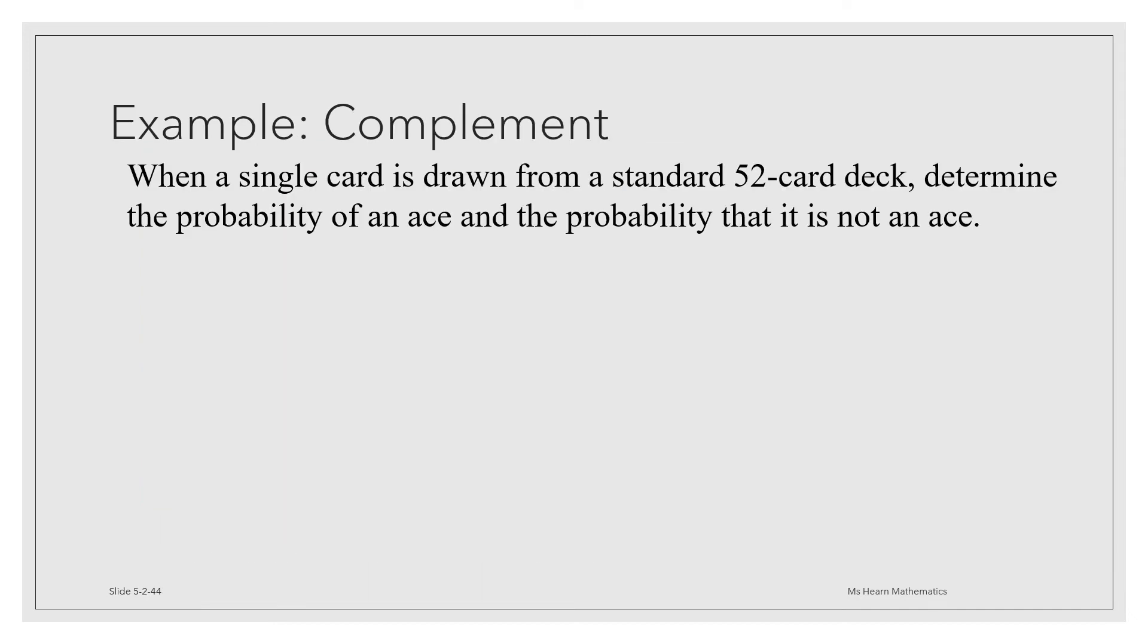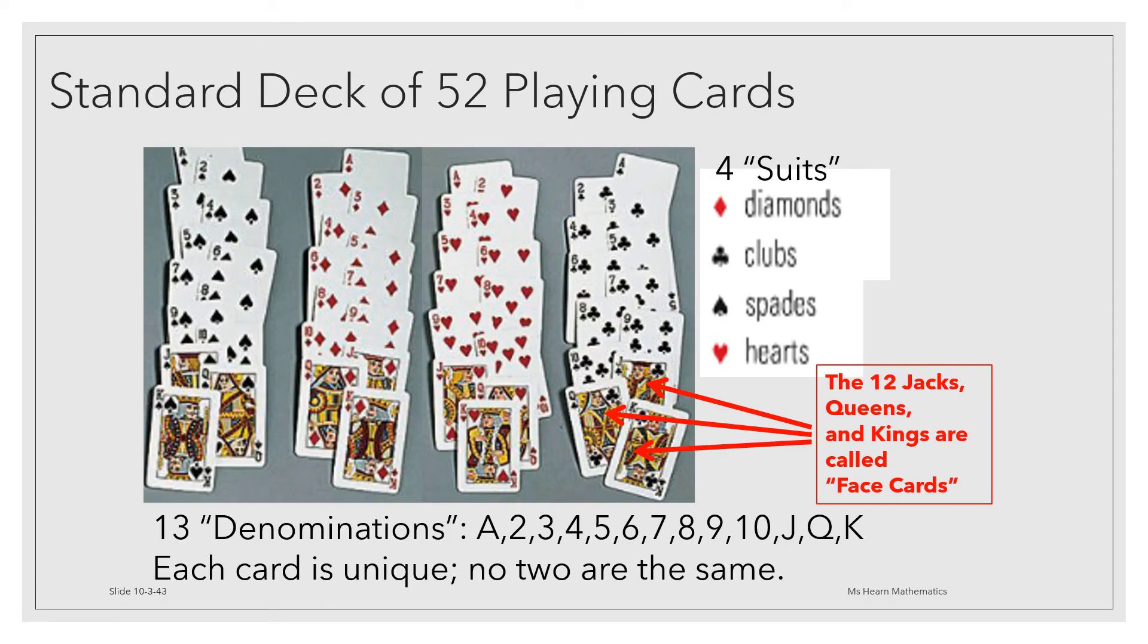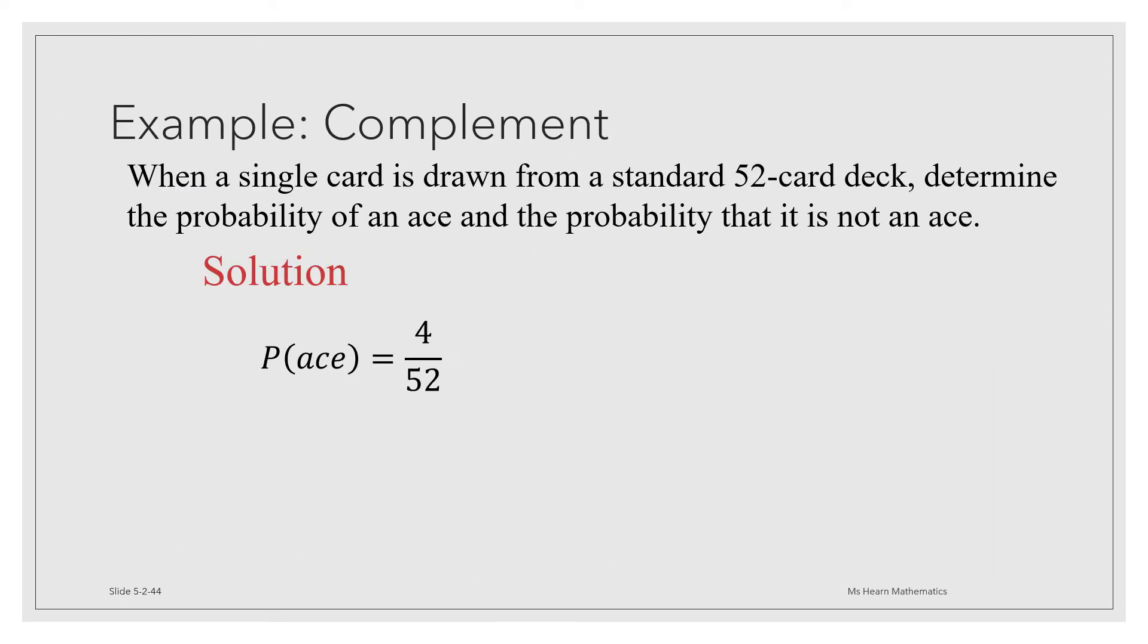When a single card is drawn from a standard 52 card deck, let's determine the probability of drawing an ace and the probability that it's not an ace. In a deck of cards, there are four aces and there are 52 cards in all. So the probability of drawing an ace is 4 over 52. Dividing 4 and 52 by their common factor of 4, this reduces to a probability of 1/13. Now let's talk about the probability of not drawing an ace. By the complements principle of probability, the probability of not drawing an ace is 1 minus the probability of drawing an ace, or 1 minus 1/13. That would be 13/13 minus 1/13, which is 12/13.